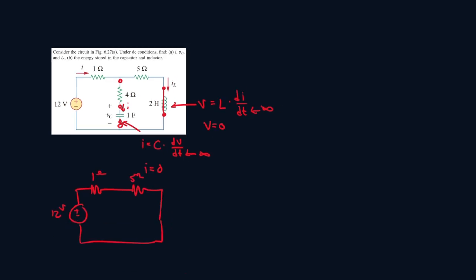So we know I is passing through here. And we also know IL is passing through here, so that means I will be equal to IL. Now to find I, we know the voltage is 12, and the total amount of resistors is 1 plus 5. So I will be equal to 2, which means IL will also be equal to 2.